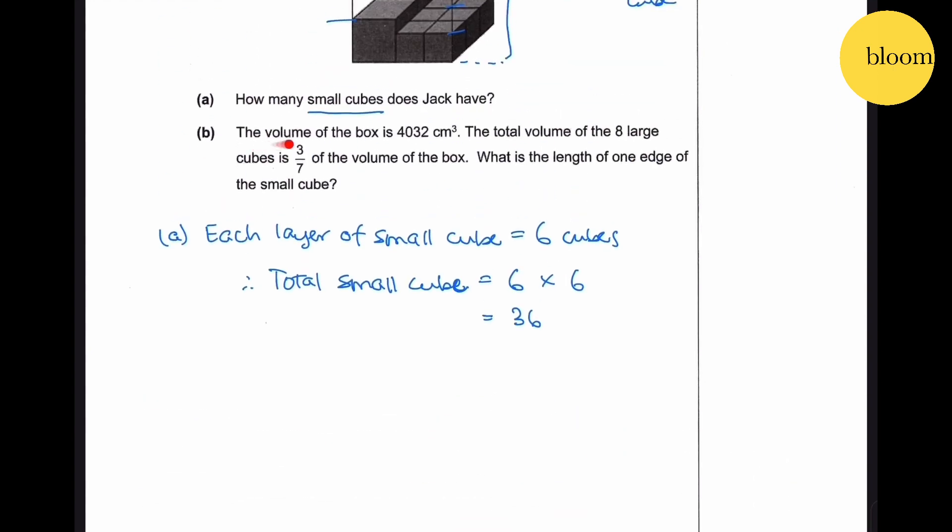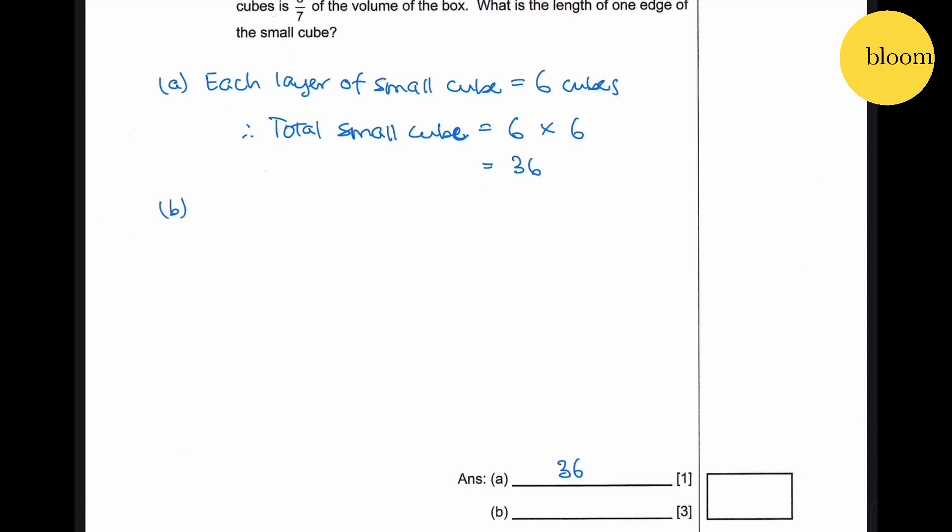Part B: The volume of the box is 4032 centimeter cube. The total volume of the eight large cubes is three-sevenths of the volume of the box. What is the length of one edge of the small cube? If big cube volume is 3/7, small cube volume will be 4/7. Four-sevenths of 4032 centimeter cube gives us 2304 centimeter cube.